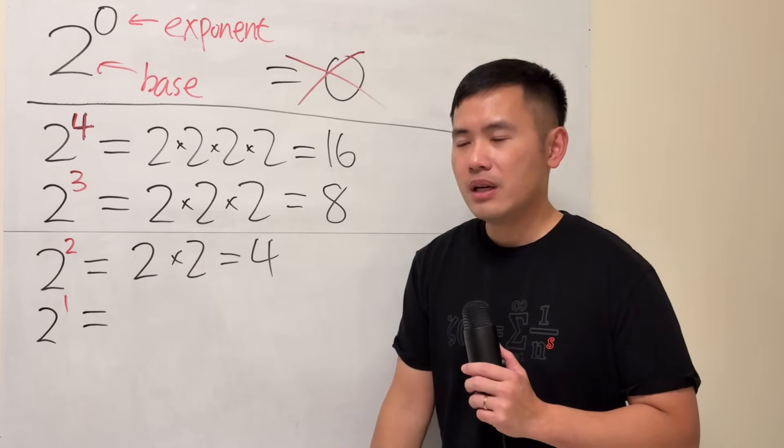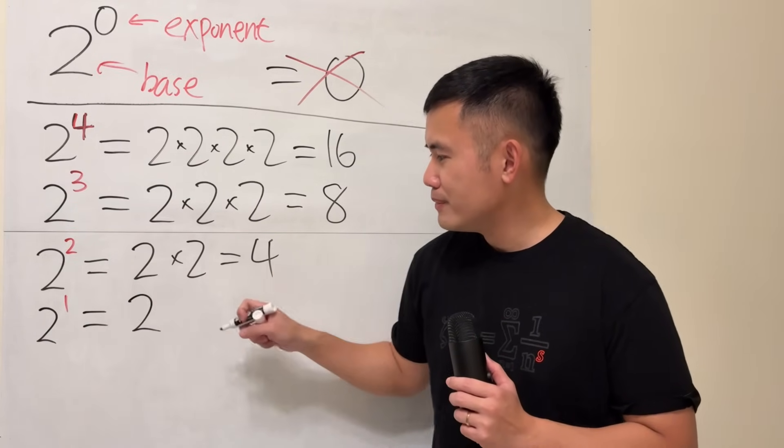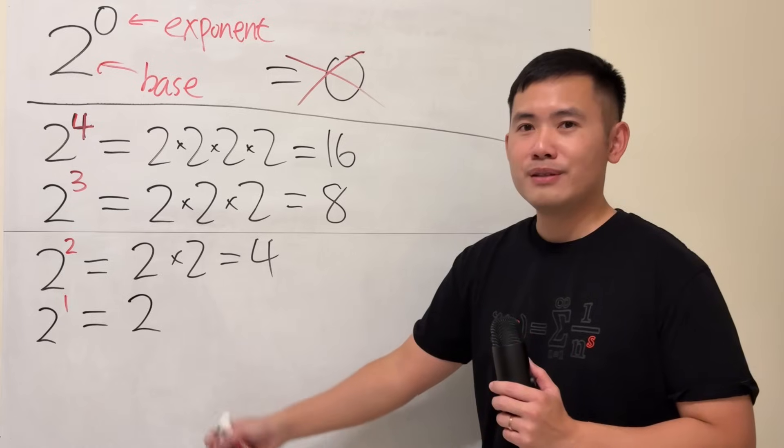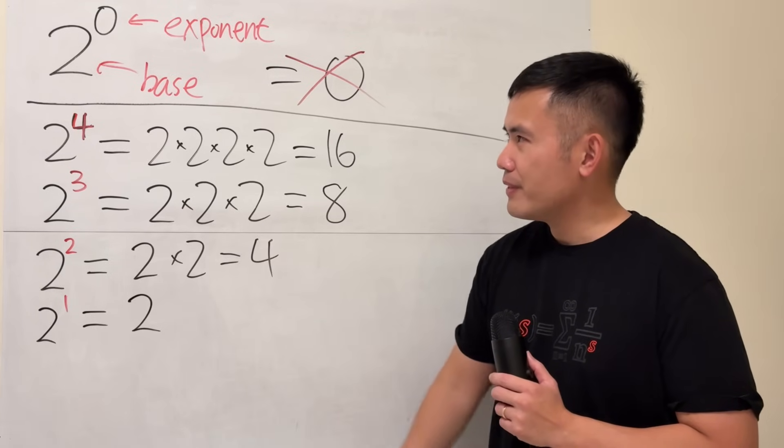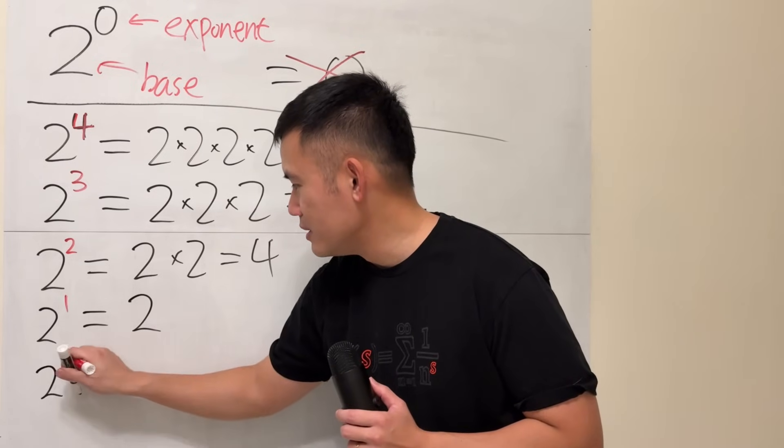4, 3, 2, 1, of course. But the 1 tells us to write down the 2 1 time, and that's it. Now, what's 2 to the 0? It's coming right here. 2 to the 0. The pattern follows. 4, 3, 2, 1, 0.